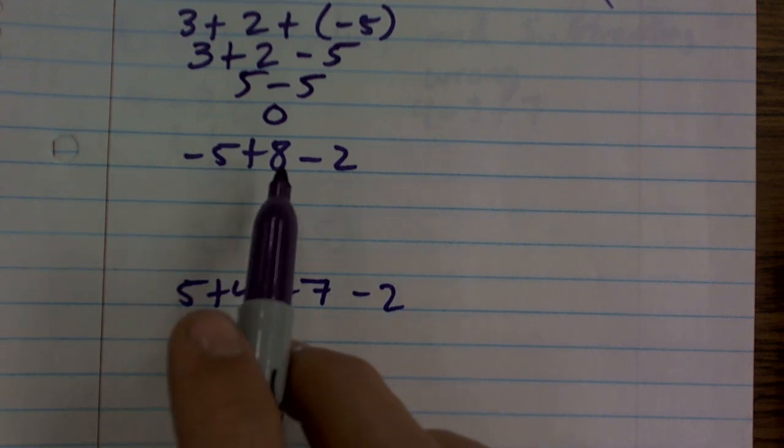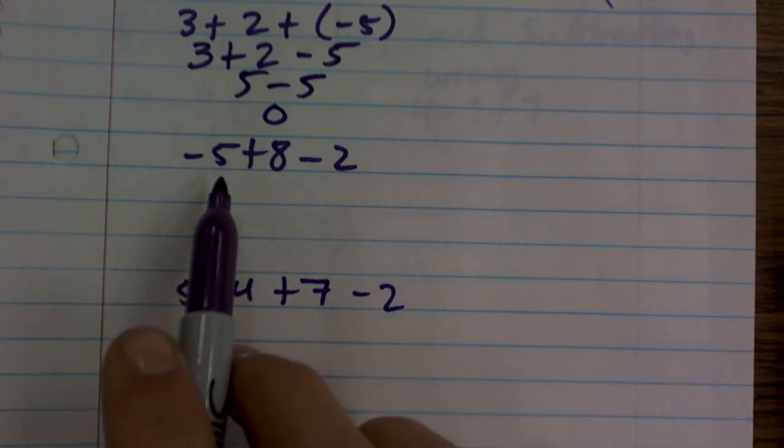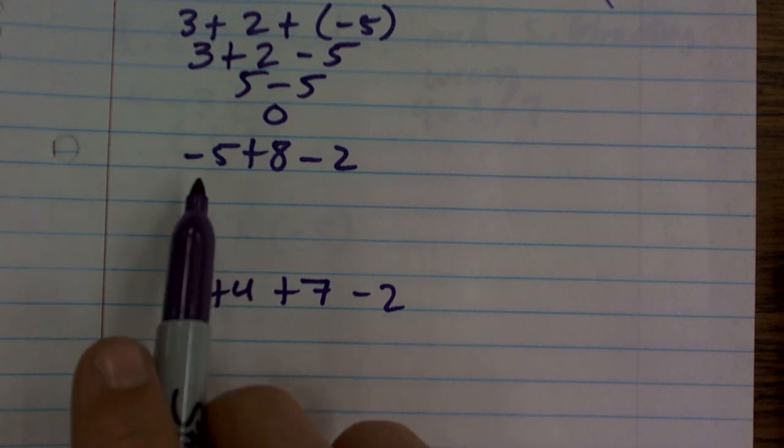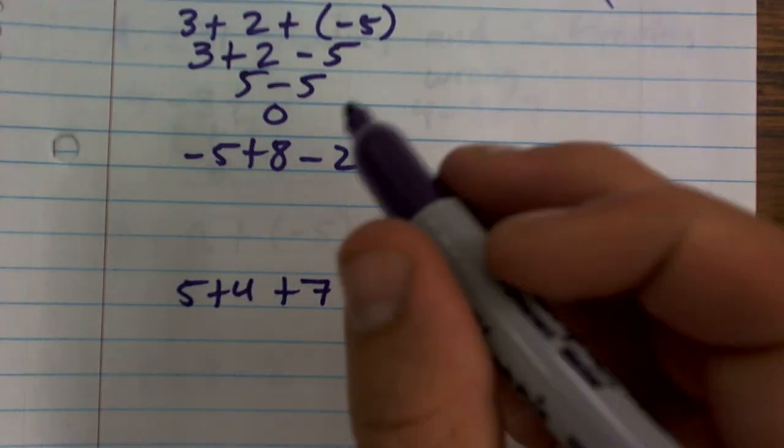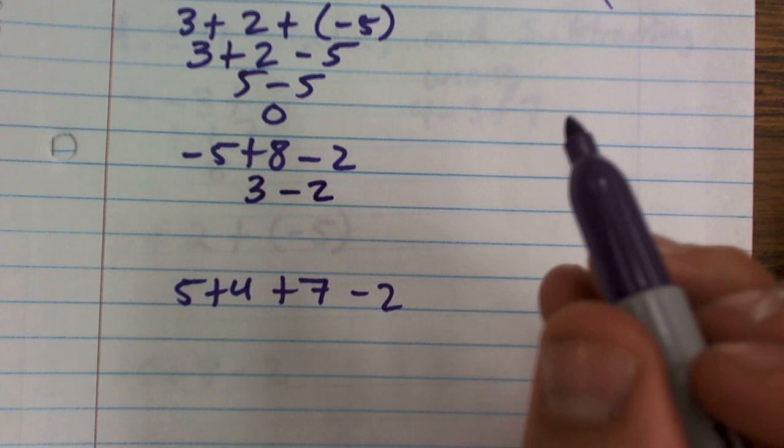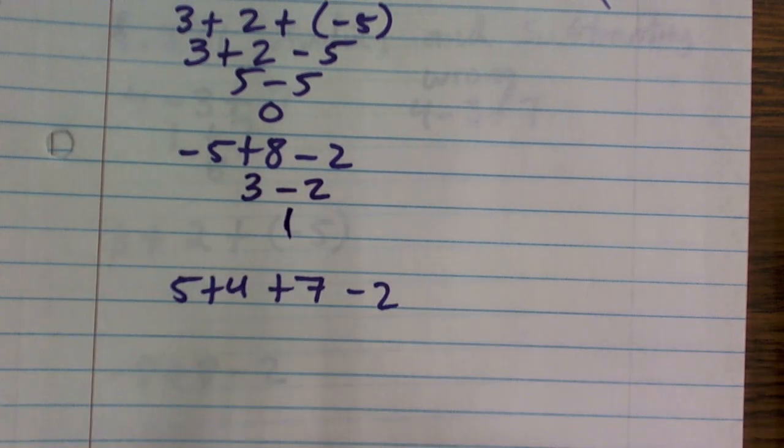Next problem, negative 5. When I have a number with a negative, that just means it's negative 5. So negative 5 plus 8 gives me positive 3 minus 2. 3 minus 2 is 1.